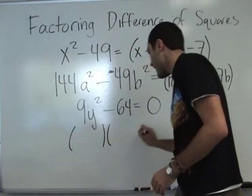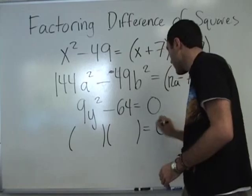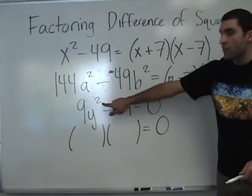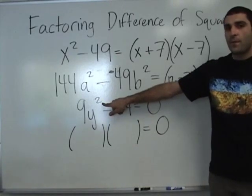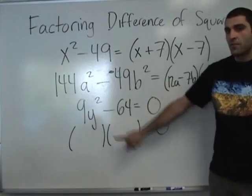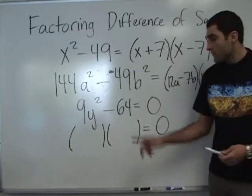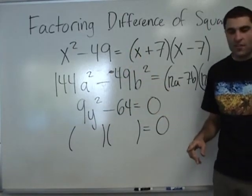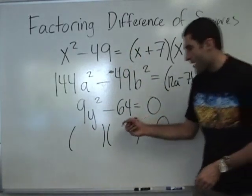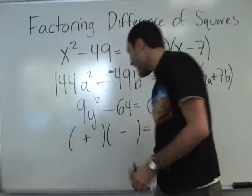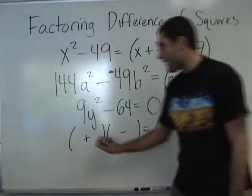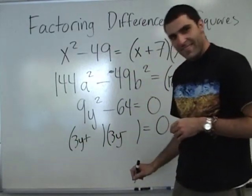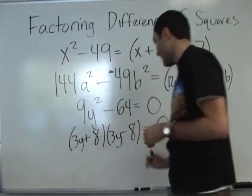Factor, factor, equal to 0. Difference of squares. Just so you know, if this was a cube, it would not be a difference of squares anymore. There is such a thing called difference of cubes. So — plus minus. What goes in the front? 3Y. What goes in the back? 8.